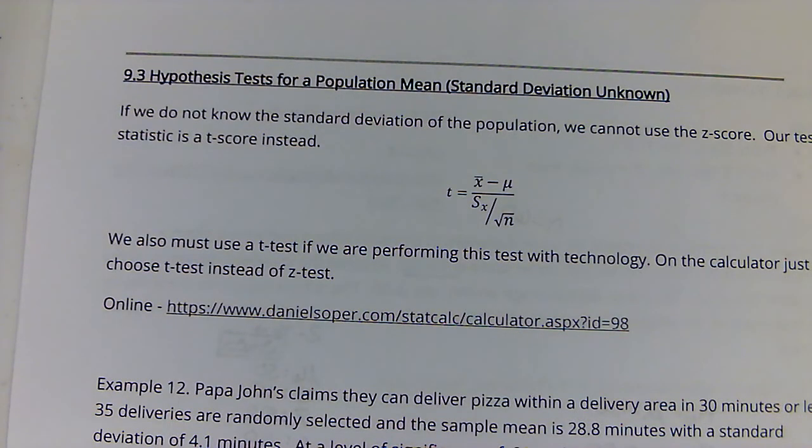In 9.3, the only difference on the hypothesis testing is that the standard deviation of the population is not known. Now, just like in previous chapters, that means we cannot use a z-score. We have to use a t-score instead.